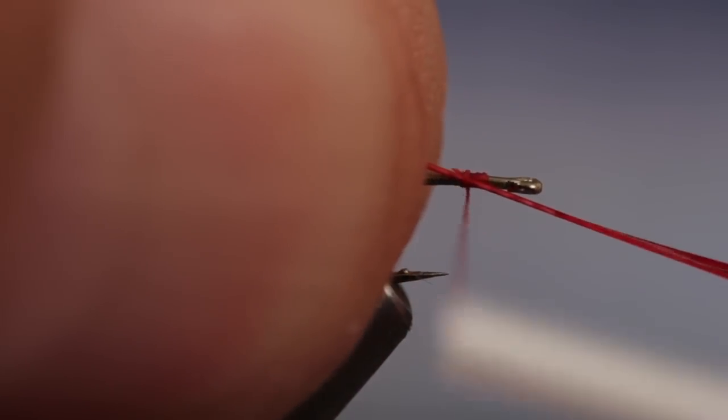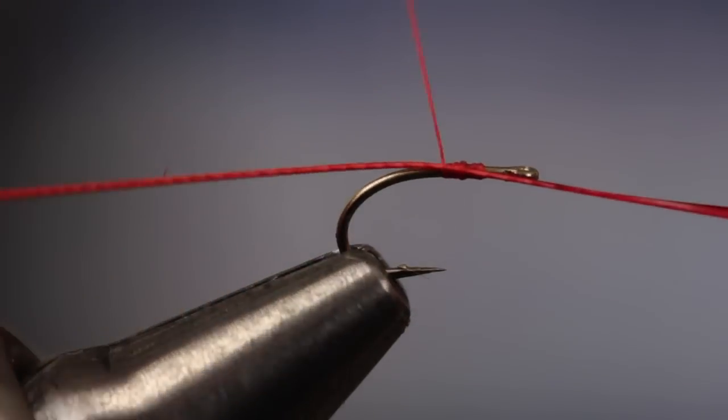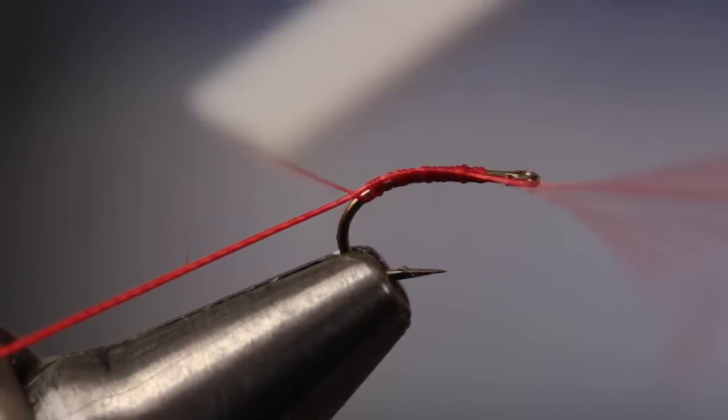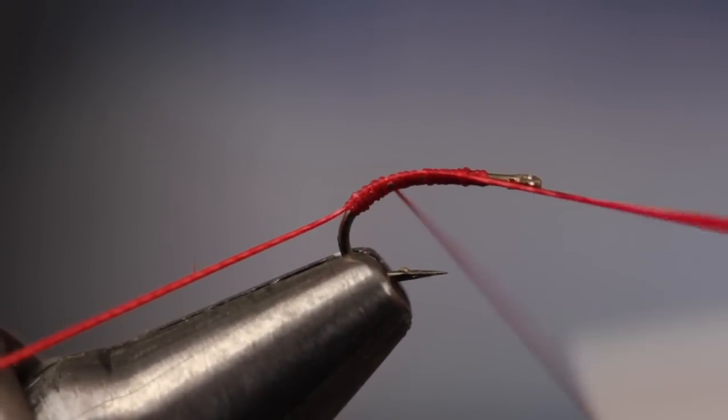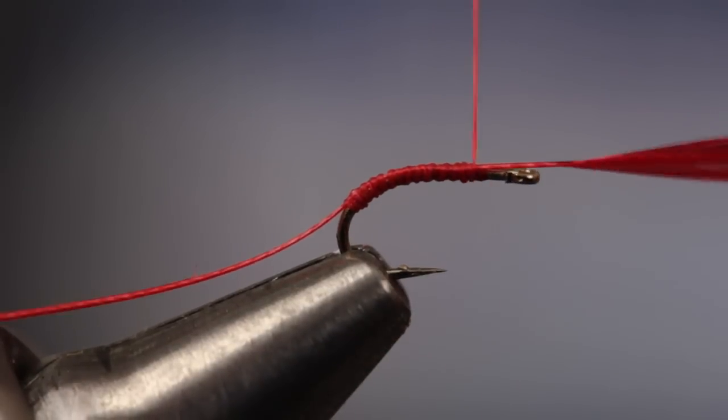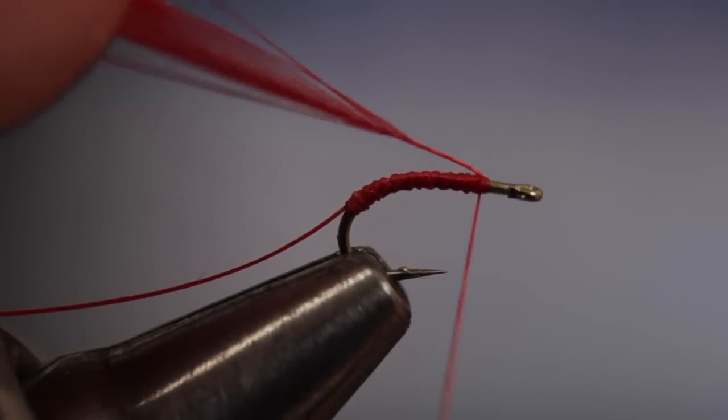Secure the tip end of the stem to the hook shank and begin taking thread wraps rearward, down into the bend, and then back up the shank to the tie-in point. You can then break or snip the tip end off.